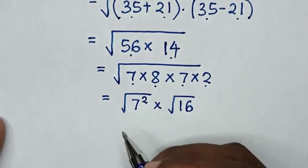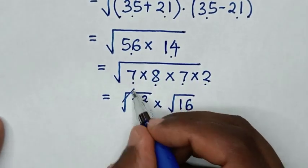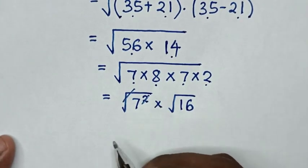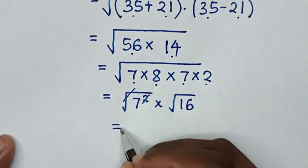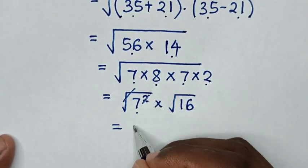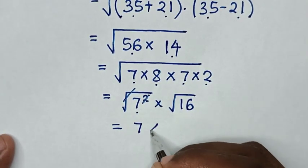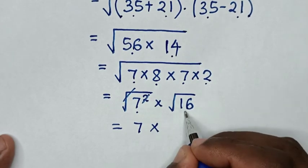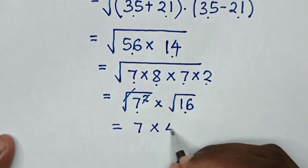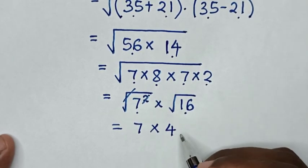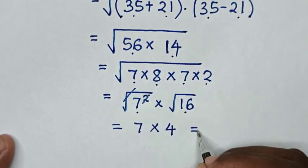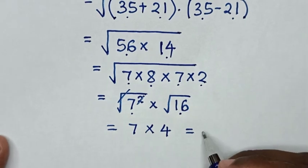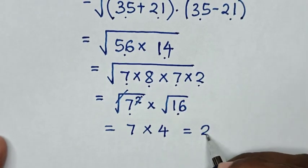In the next step, this square root will cancel with this square. So it will be equal to 7 times the square root of 16, which is 4. Then it will be equal to 7 times 4, which is 28.